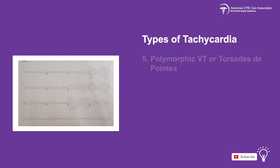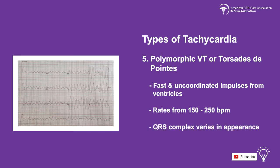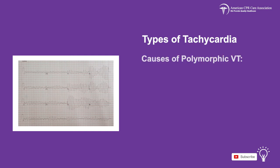The last type of tachycardia is called polymorphic VT, or torsade des pointes, which is when different areas in the ventricles fire fast, uncoordinated impulses. Ventricular rates range from 150 to 250 beats per minute, and the QRS complex varies in appearance. Some causes of polymorphic VT include diarrhea, hypomagnesemia, and hypokalemia.